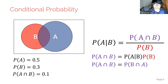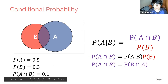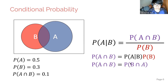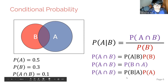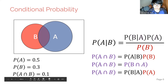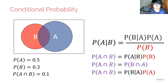We can also rewrite that equivalently. If you think about it, the intersection of A and B is the same as the intersection of B and A. So the probability of A given B times probability of B is the same as probability of B given A times probability of A. Using that substitution, we get: probability of A given B equals probability of B given A times probability of A, all over probability of B. This is Bayes' rule.